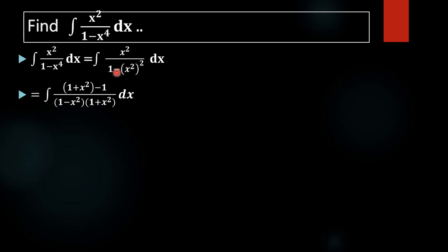That is, 1 minus x squared whole square is a squared minus b squared, which results as 1 minus x squared into 1 plus x squared — that is, a plus b into a minus b.